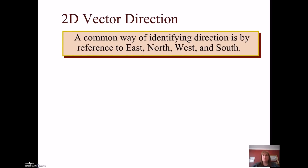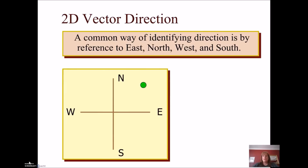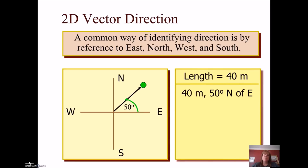Since we're going to deal with two dimensions, plus and minus, up and down, or right and left are not adequate anymore — we're going to have to identify them. We usually do that in terms of the compass: east, north, west, south. So if we set up a coordinate system and say I travel 40 meters along this line, I would say my displacement is 40 meters at 50 degrees north of east. We call it 50 degrees north of east because the angle is measured from the positive x-axis, which we're calling east, and it's north of that east axis.